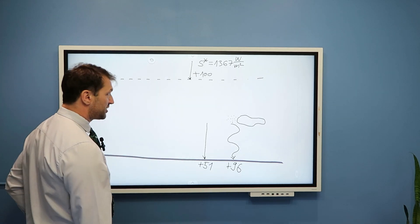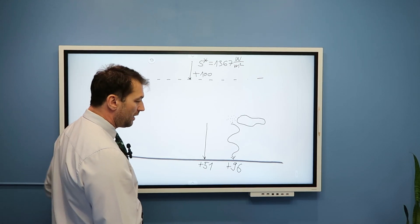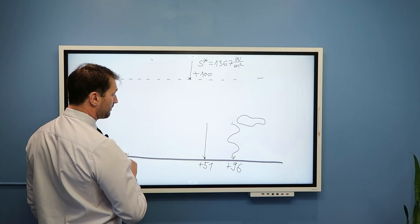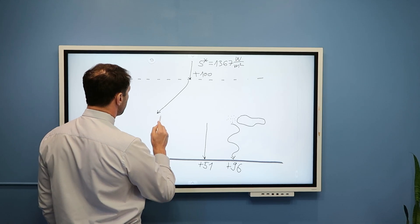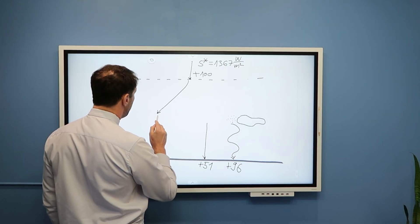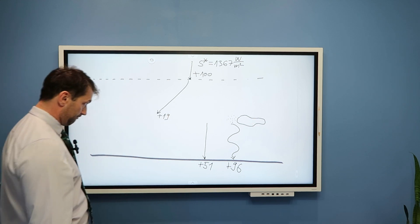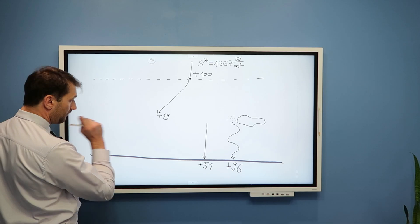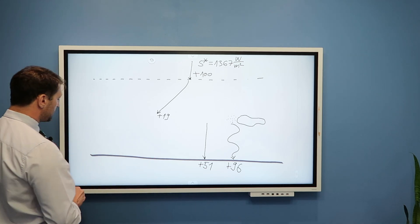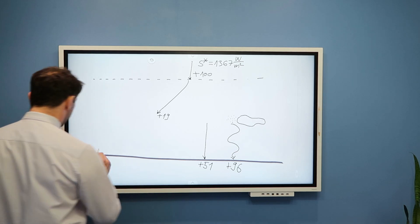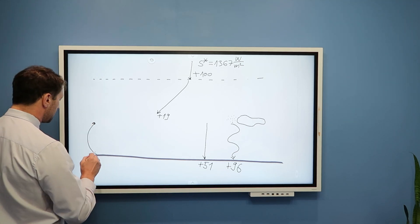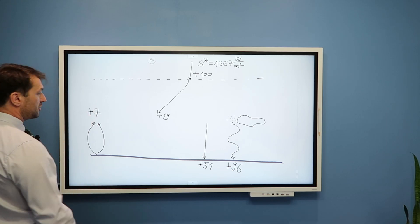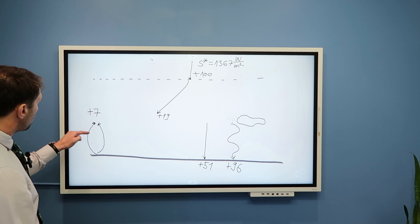Our atmosphere absorbs radiation through four processes. First, part of this radiation is directly absorbed by the atmosphere — plus 19 units from solar radiation, as we know from the previous video. Second, the atmosphere will absorb from the Earth's surface through conduction and convection — about plus 7 units of energy through conduction and convection.